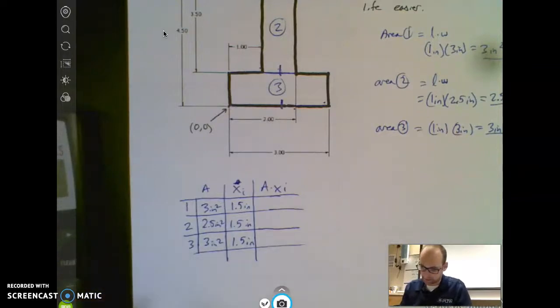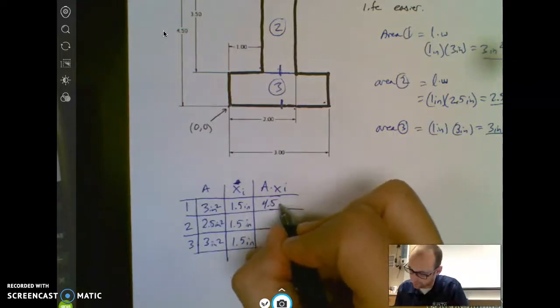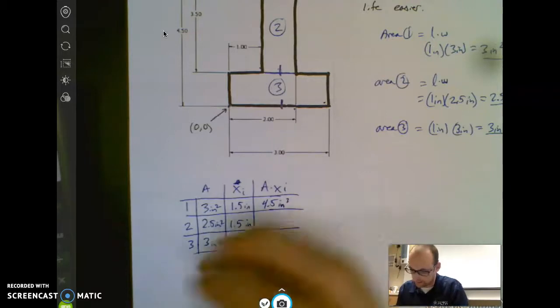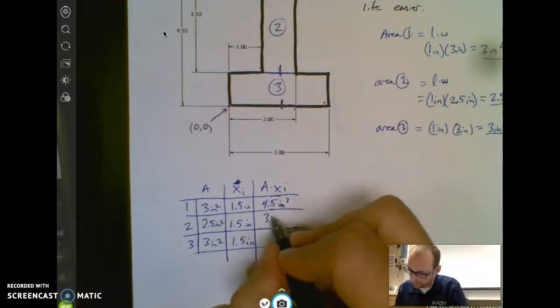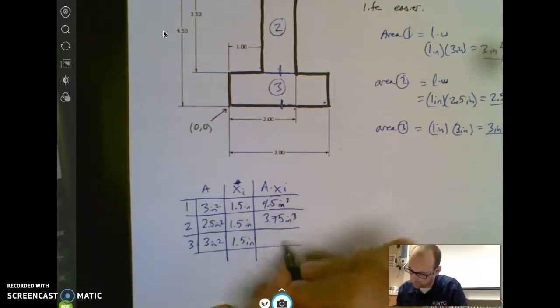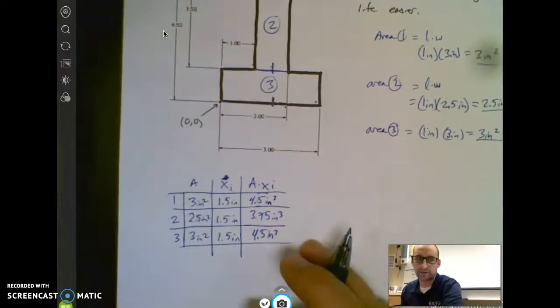Now I multiply those together. So 3 inches squared times 1.5 is 4.5 inches cubed. And then this one's 2.5 times 1.5, 3.75 inches cubed. And this one's 4.5 inches cubed. We'll come back to that in a little bit.